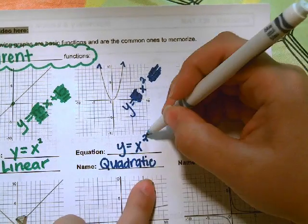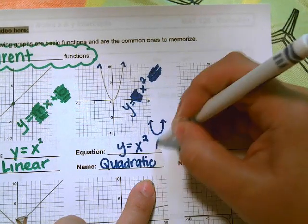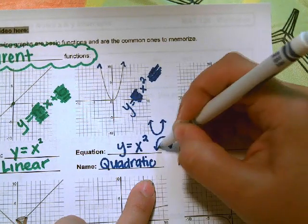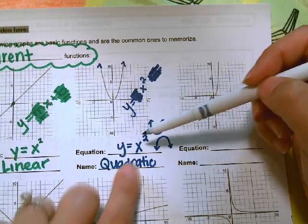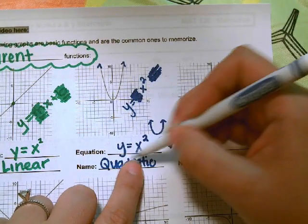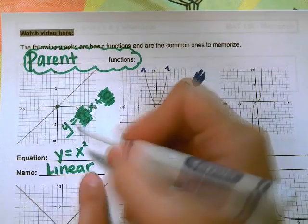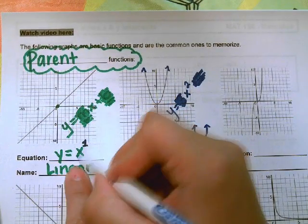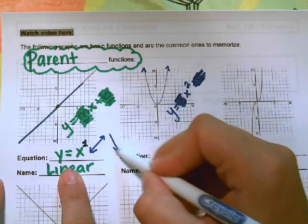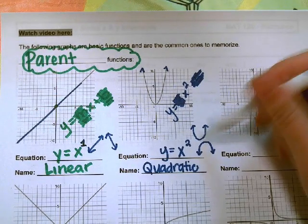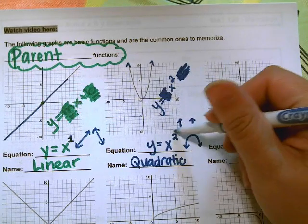Any time the highest exponent is a 2, it's going to make this shape. It might go up or it might go down — you'll learn more about this in your next math class. For now, you just want to get good at looking at an equation and identifying the general shape. The highest exponent of 1 makes a line that goes up or down, and a highest exponent of 2 makes that u-shape.